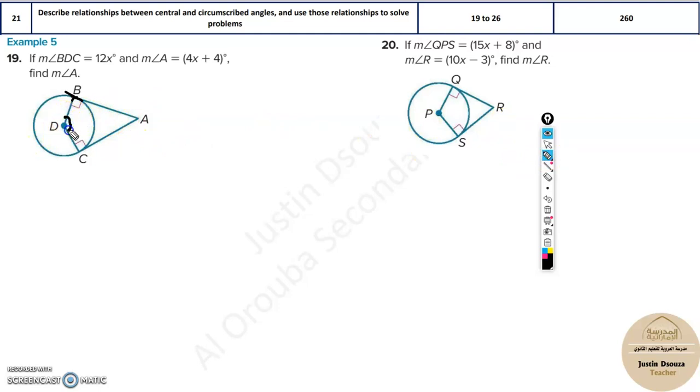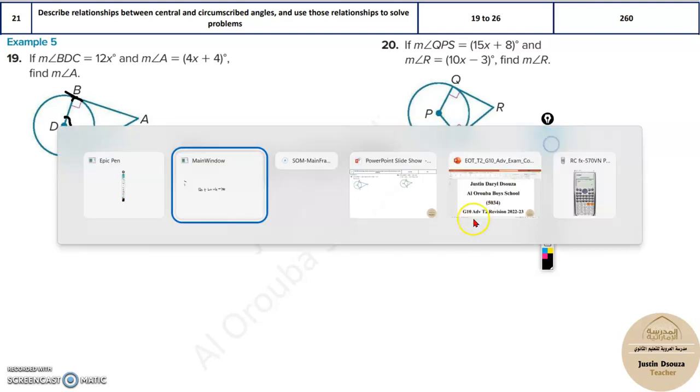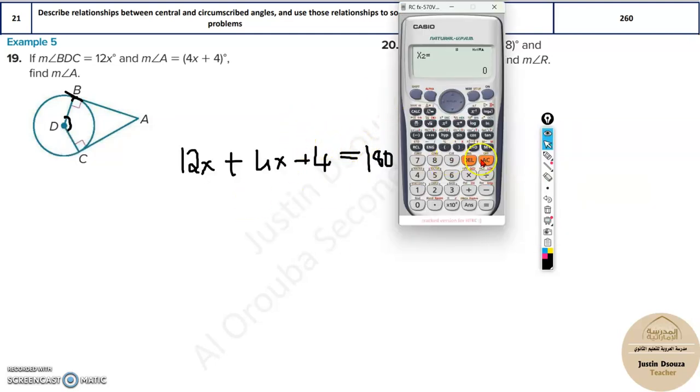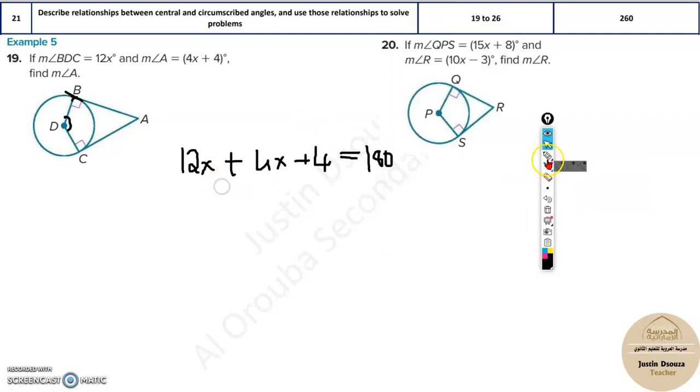The measure of angle D, that is BDC, is 12x. That plus measure of angle A is given. 4x plus 4 must be equal to 180 degrees. Now I can put this directly in the calculator and solve it. Sorry, don't do it directly in the calculator. You need to do some steps. Over here, 12x plus 4x would be 16x. Then take the 4 to the other side. 180 minus 4, that would be 176. And now you can divide, 176 by 16. And it will be about 10, 11. x will be equal to 11.